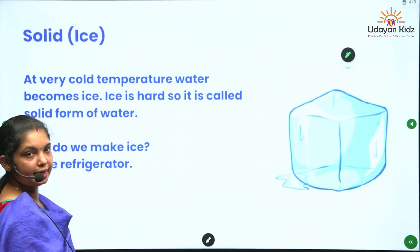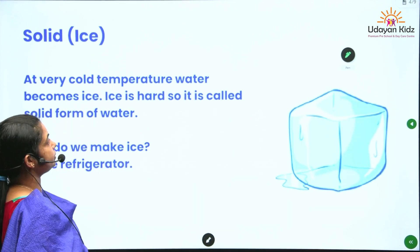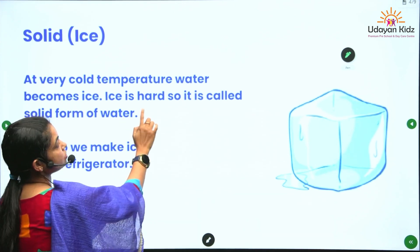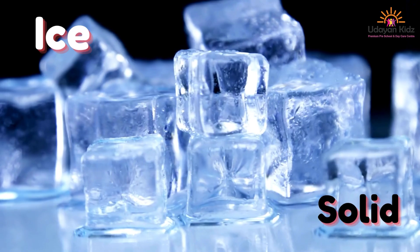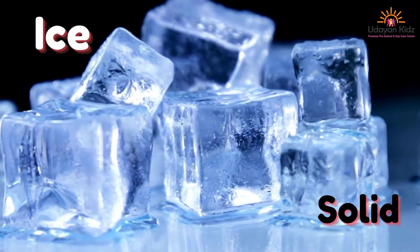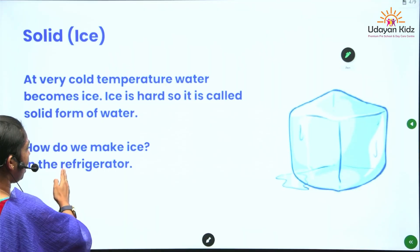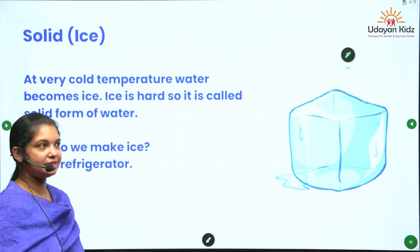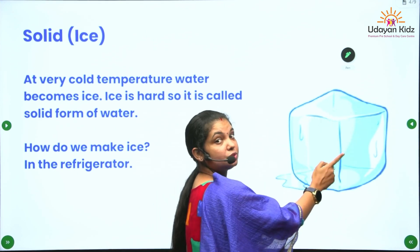The first one is solid, that is ice. At very cold temperature, water becomes ice. Ice is hard, so it is called the solid form of water. How do we make ice? In the refrigerator. This is the example of ice — this is a solid.